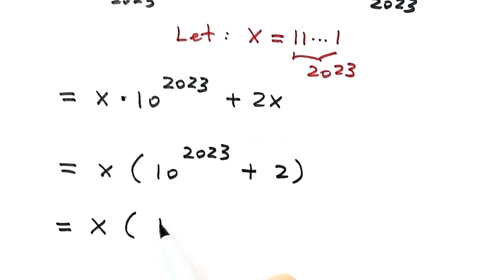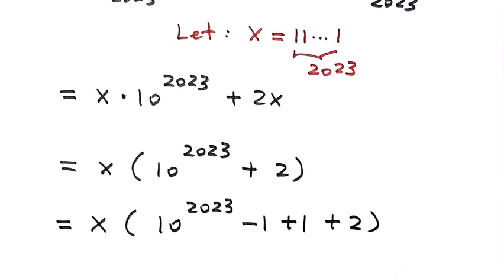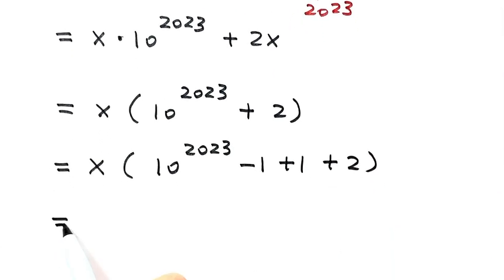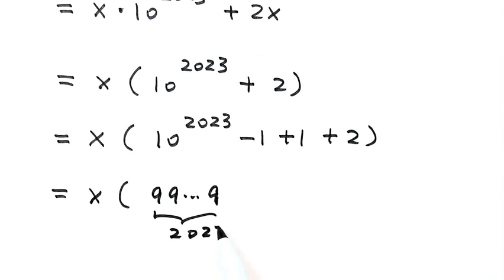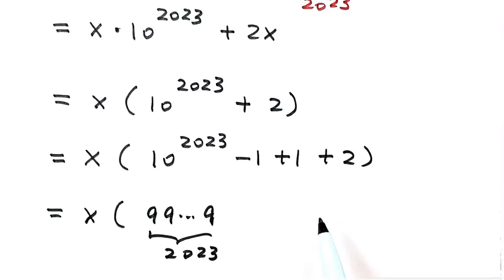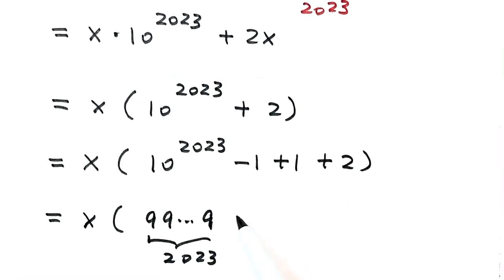Now let's see here. So 10 to the power of 2023, we're going to minus 1, then plus 1, that is like plus 0, then plus 2. So then here, combine these two together. That would be 999. So here there are 2023 nines. Then combine these two together. That's plus 3.